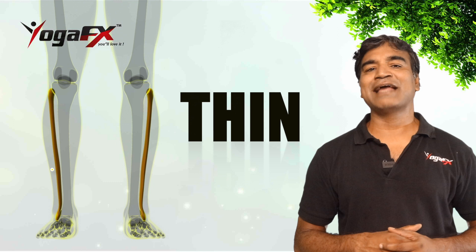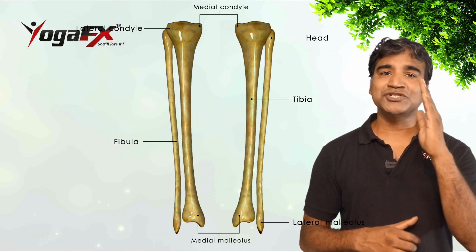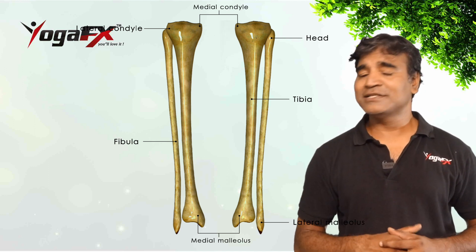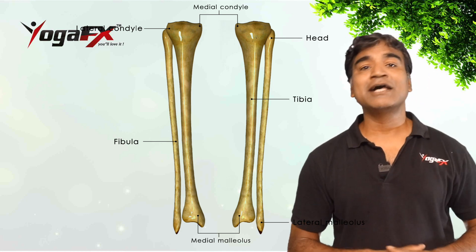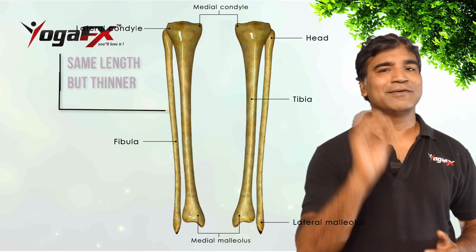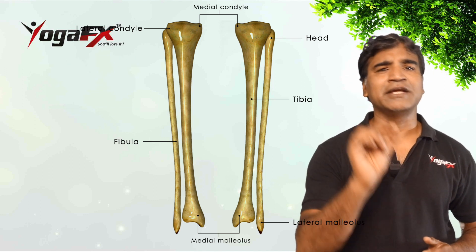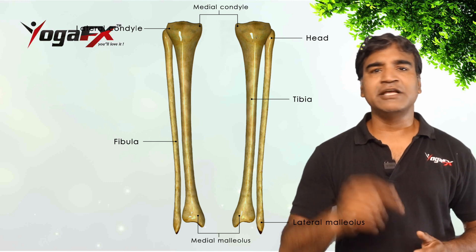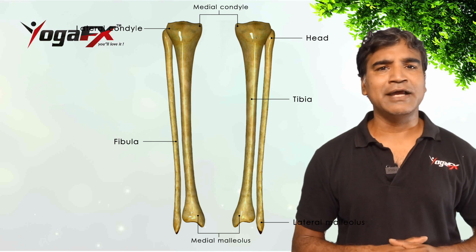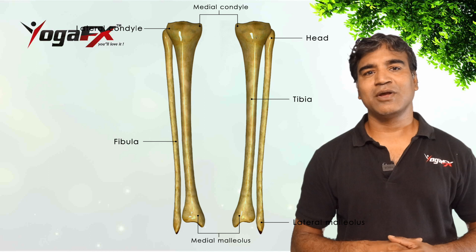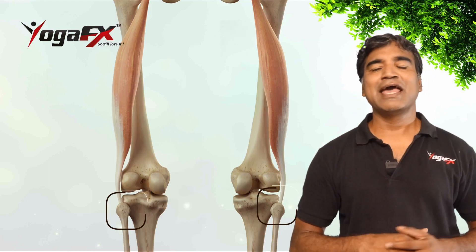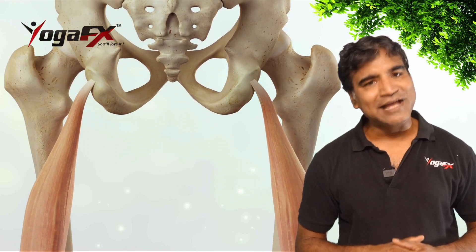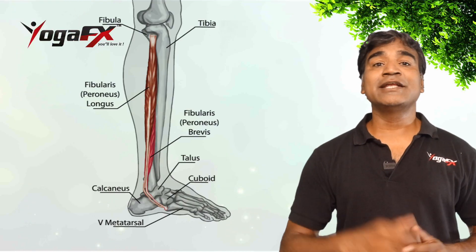The fibula is the long, thin, lateral bone of the lower leg. It runs parallel to the tibia and plays a significant role in stabilizing the ankle and supporting the muscles of the lower legs. Compared to the tibia, the fibula is about the same length but considerably thinner — reflecting its supportive rather than weight-bearing role. Many muscles attach to the fibula through tendons; one of the hamstrings, the biceps femoris, has its insertion at the head of the fibula and flexes the leg at the knee. Eight other muscles, including the three fibularis (peroneus) muscles, the soleus, and several toe flexors and extensors, also originate on the fibula.